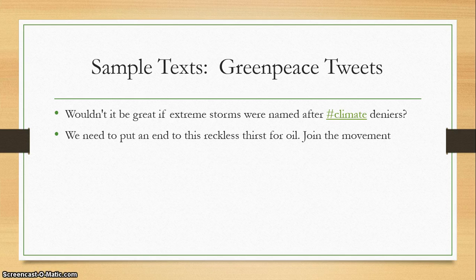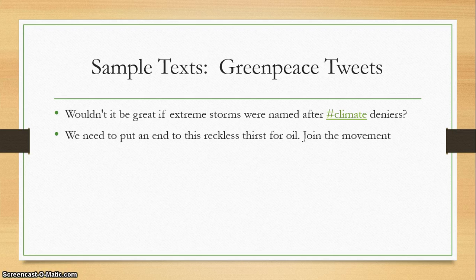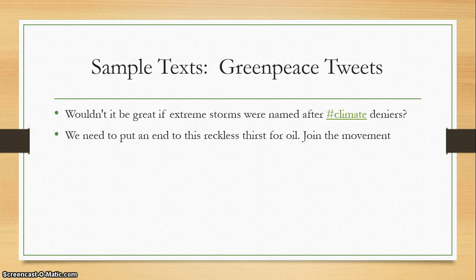In the second tweet, it says: 'We need to put an end to this reckless thirst for oil. Join the movement.' There are a couple of interesting things happening there. First is the use of the word 'we,' which automatically includes the reader, whether you're a member of Greenpeace or not. Second, the use of the word 'reckless' — it's one of those emotionally charged words. They could have taken it out or used the word 'unsustainable,' but they picked 'reckless.' And then there's some syntax going on: that last sentence, 'join the movement,' is really brief — it's designed to stand out. On their Twitter account, they didn't even have a period there, so it's designed to help you notice it.